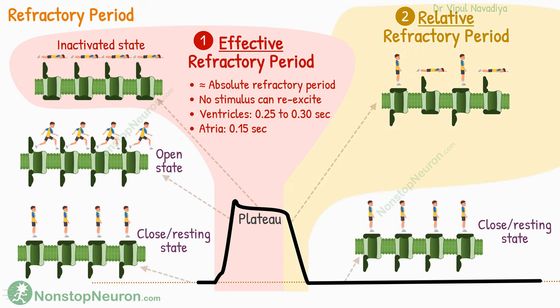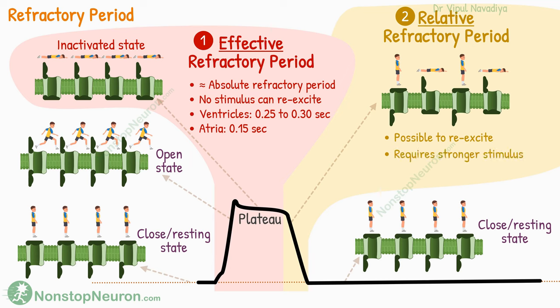Now, the relative refractory period. At the end of the plateau, the channels start switching from the inactivated state to a closed or resting state. From this state, they can be opened. However, not all the channels have recovered yet, so although it's possible to stimulate the cell during this period, it requires a stronger-than-usual stimulus. The duration of this period in ventricular muscles is about 0.05 seconds. At the end of this, almost all the channels return to a resting state, and the cell can respond to impulses in the usual manner.